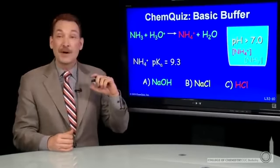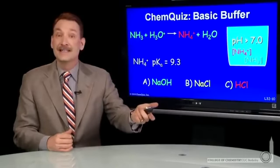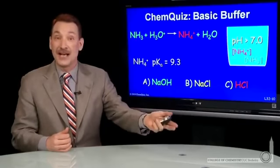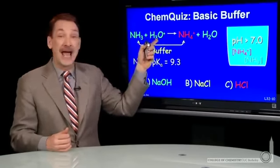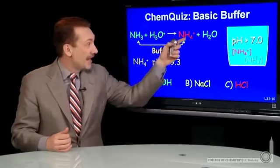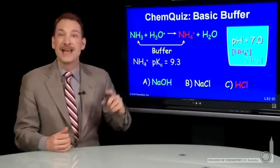So if I'm talking about NH3, I need its conjugate acid. It's a base already. I need its conjugate acid. So to form its conjugate acid, I would add a strong acid and convert some of my NH3 to NH4 plus.